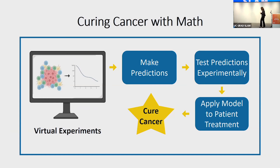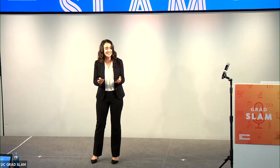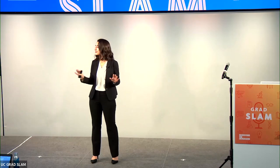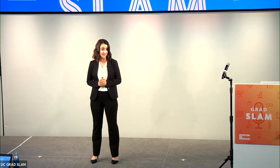Unlike cancer, math is predictable and we can use the power of mathematics to better understand the complex biology of the human body. By sharing my research, I hope that if you were one of those students questioning why we have to learn math, you can now begin to see that we can use math in all sorts of ways, including to revolutionize cancer treatment and save millions of lives. Thank you.